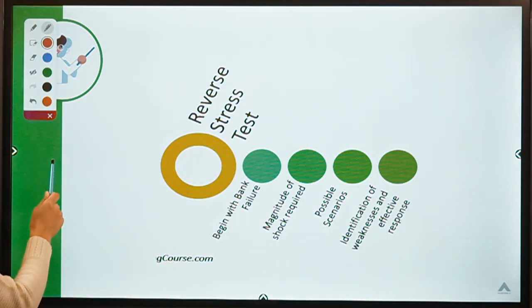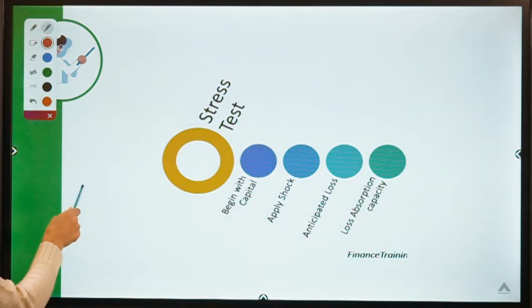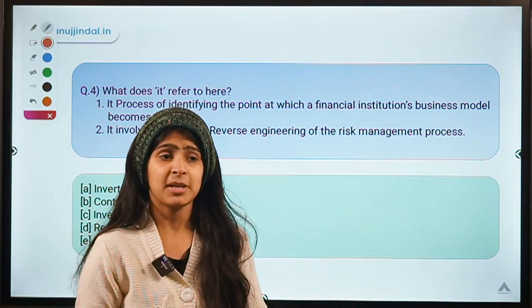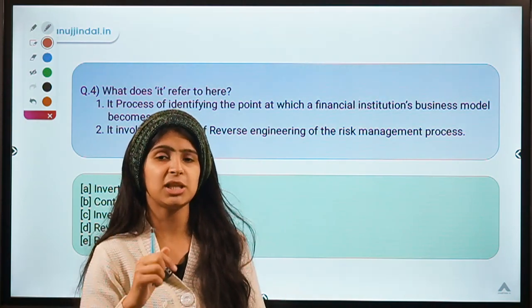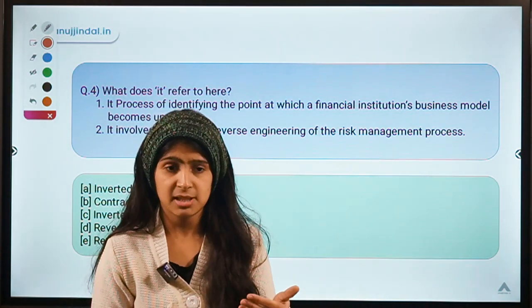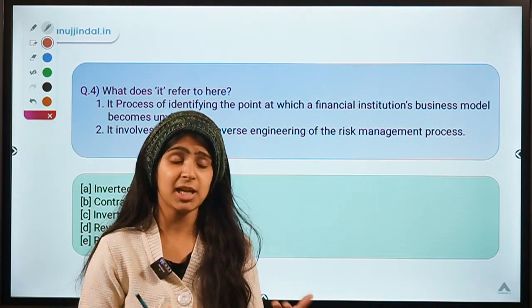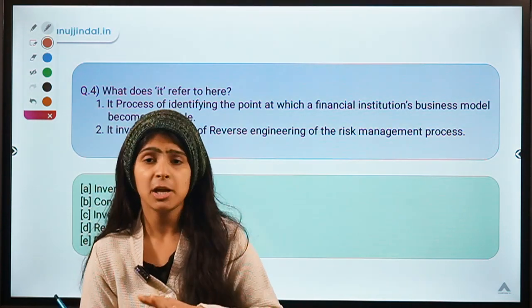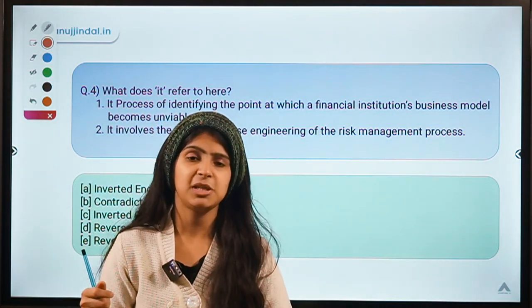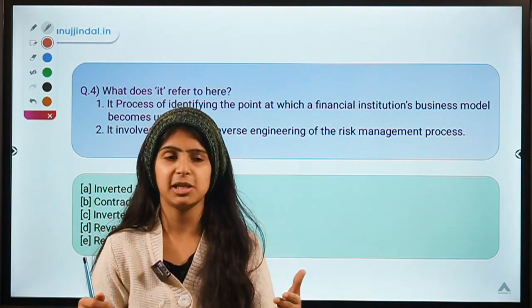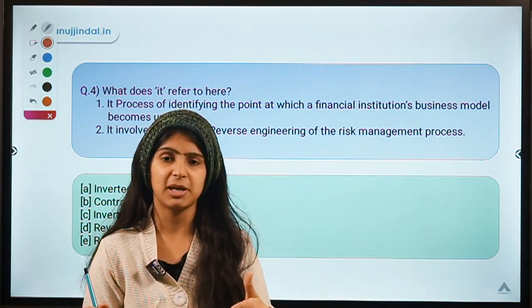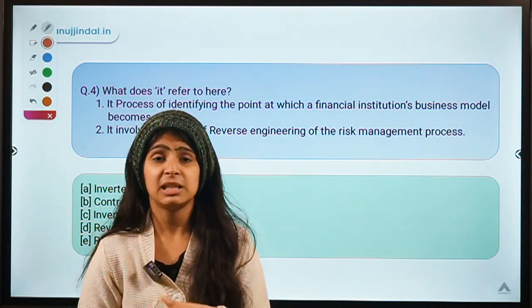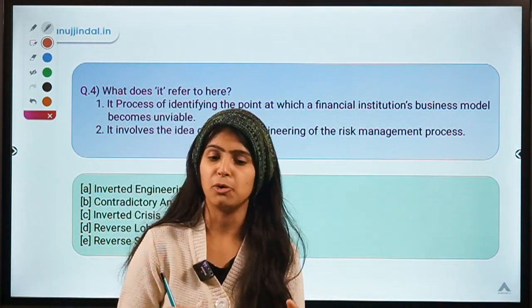RBI has recently released a Financial Stability Report, and many experts and economists are saying that we need to change the way we calculate these statistics or the way we do stress testing. One point being cited is the reverse stress test — it can be included as a more efficient option to let banks know about their weaknesses and figure out the major areas they need to work upon.